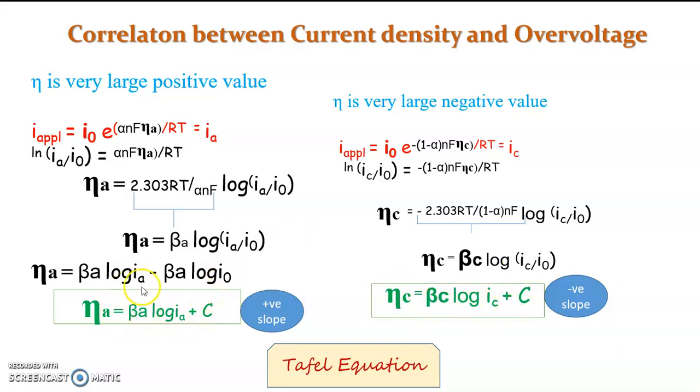Here, the difference is that the βA which is 2.303 RT by alpha NF is positive value. And if we draw a graph between overvoltage and the current density, we will get a positive slope as βA. And in here, βC is minus 2.303 RT by 1 minus alpha NF, and the same graph we will get βC as a negative slope. These equations are known as Tafel equations.